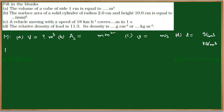Now come to the investigation part. For the first problem, the side of the cube is given as 1 centimeter. We need to find the volume in SI system, so we convert: 1 centimeter equals 1 into 10 to the power of minus 2 meters.